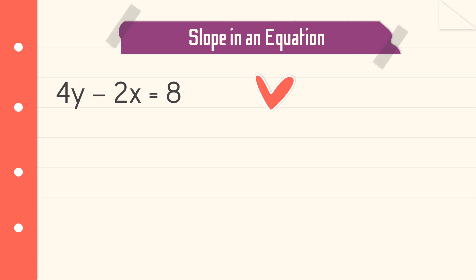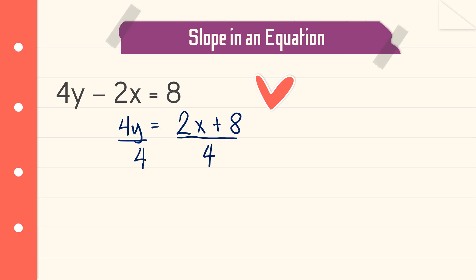Let's have this one: 4y − 2x = 8. Applying the addition property of equality, we transpose −2x to the other side — it becomes positive 2x — so we have 4y = 2x + 8. Then we divide both sides by 4: y = (1/2)x + 2. So the value of the slope is one-half.